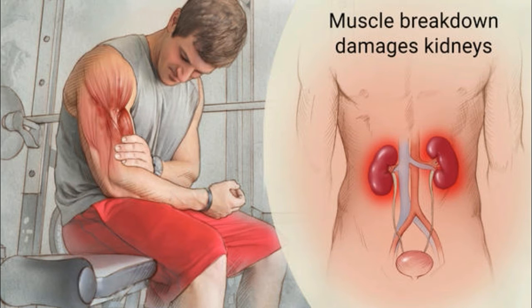Causes. Rhabdomyolysis occurs with muscle injury, and there are a number of factors responsible for causing injury to muscles. Metabolic syndromes such as ketoacidosis, marked by excessive production of ketone bodies, can also induce damage to the skeletal muscles. Exercise is another cause — severe or rigorous exercise can disintegrate the skeletal muscle, and extreme muscle activity may injure the muscles.